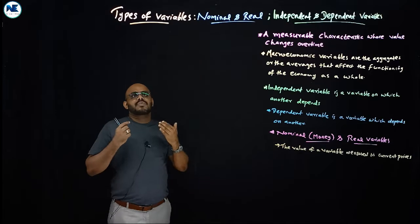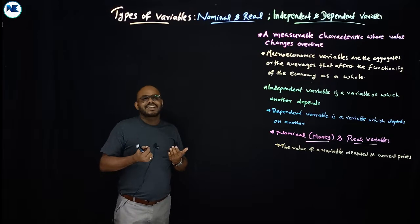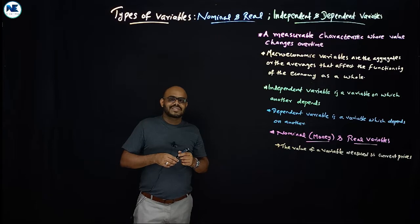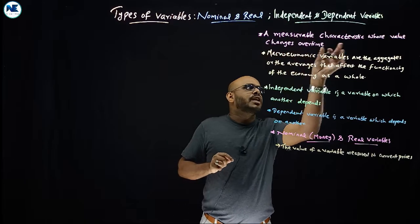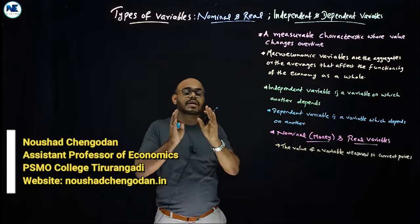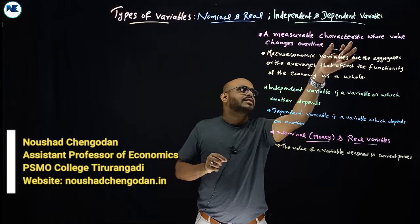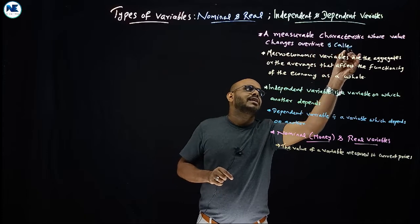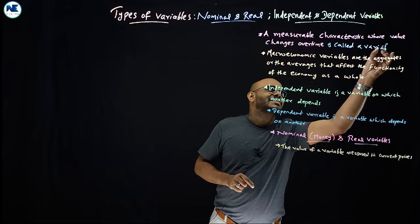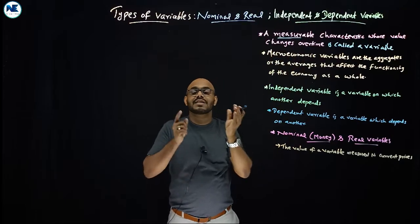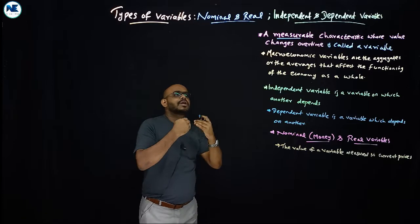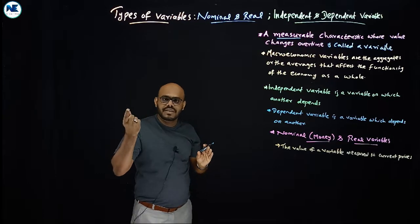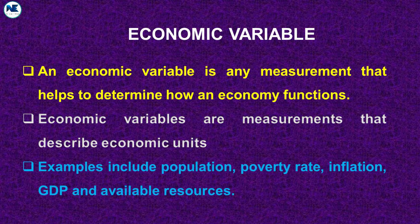Let me explain the meaning of variable. A variable is a measurable characteristic whose value changes over time. This is very simple — you can measure it, and it will vary over time. Those are the two key characteristics: you can quantify it, and it changes over time.